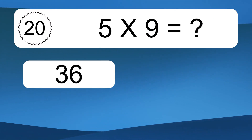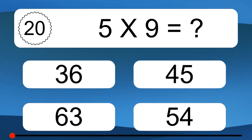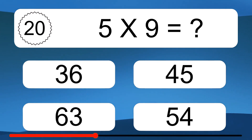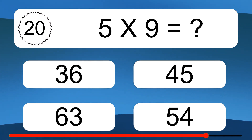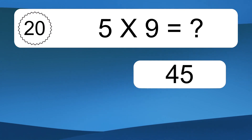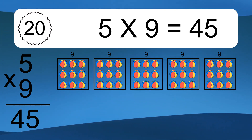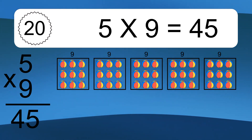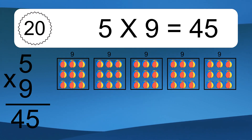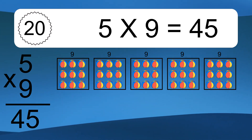5 times 9 equals what? We have 5 boxes, and each box has 9 colorful balls inside. If you count all the balls in all the boxes together, you will have 5 times 9 balls. This equals 45 balls.